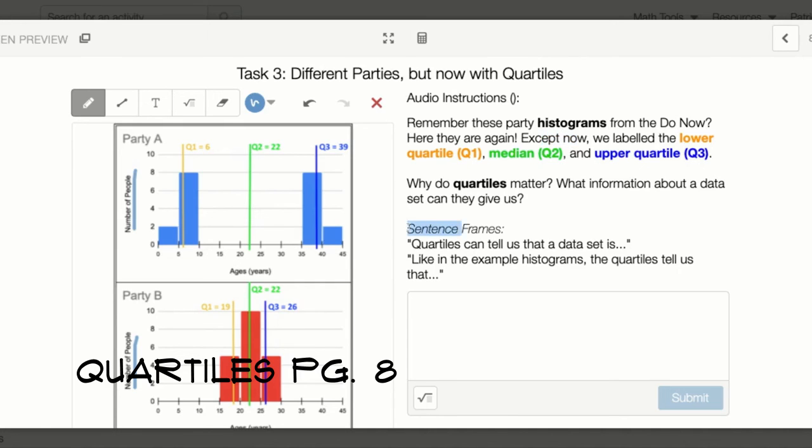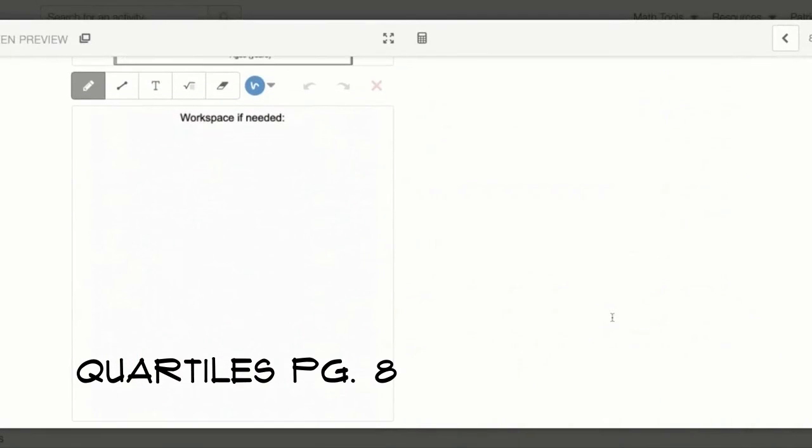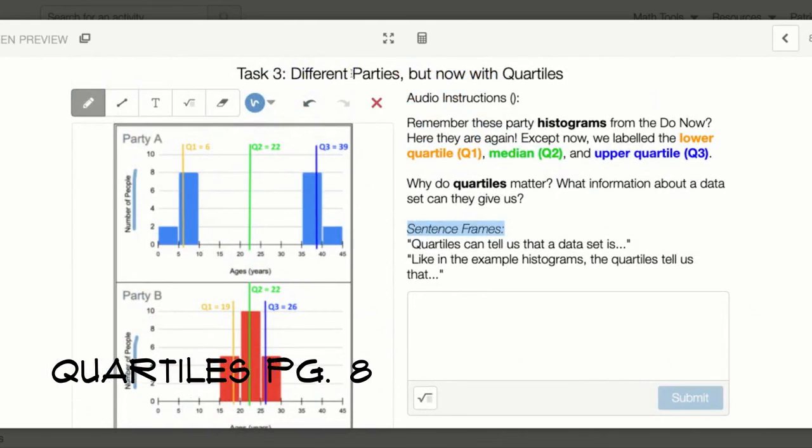Some sentence frames that might help you answer those two questions are: Quartiles can tell us that a data set is dot dot dot. Like in the example histograms, the quartiles tell us that dot dot dot. That is page eight.